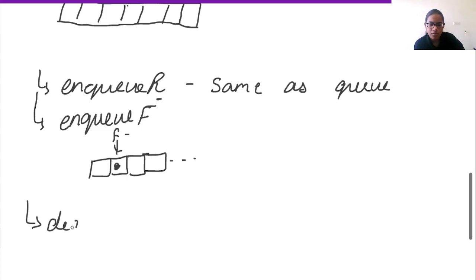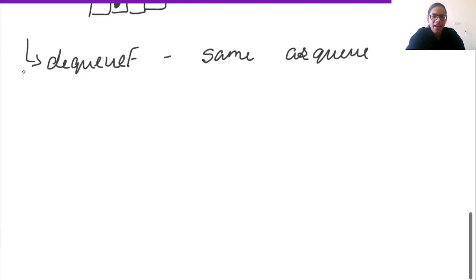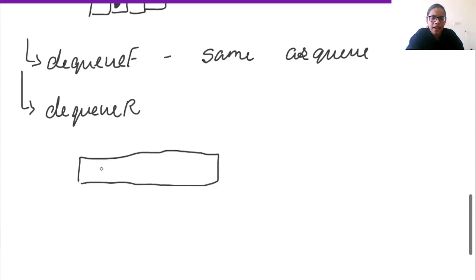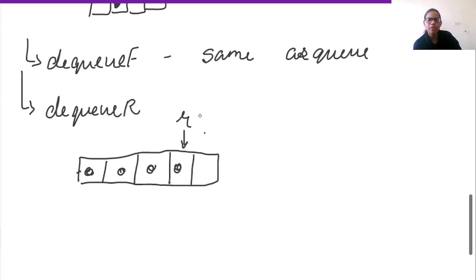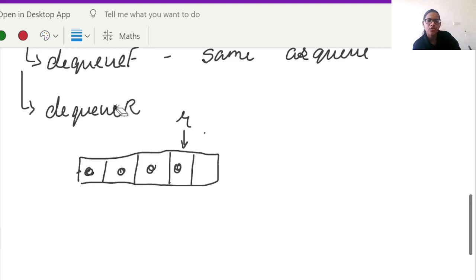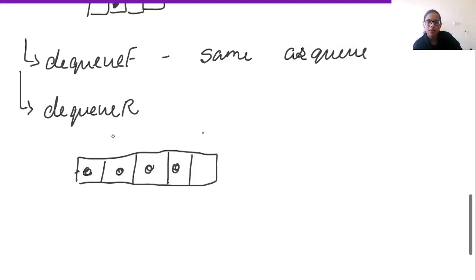For the dequeue operations: dequeue at front is the same as in the normal queue. For dequeue at rear, we move the rear pointer from its current position to the previous one — we decrease the value of rear. That is how we dequeue at rear.